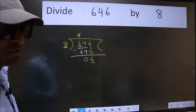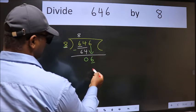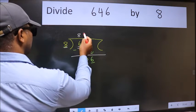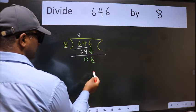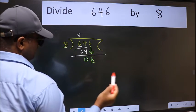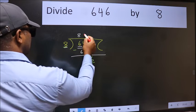what we should think of doing is which number should we take here. If I take 1, we will get 8. But 8 is larger than 6. So what we do is we take 0.